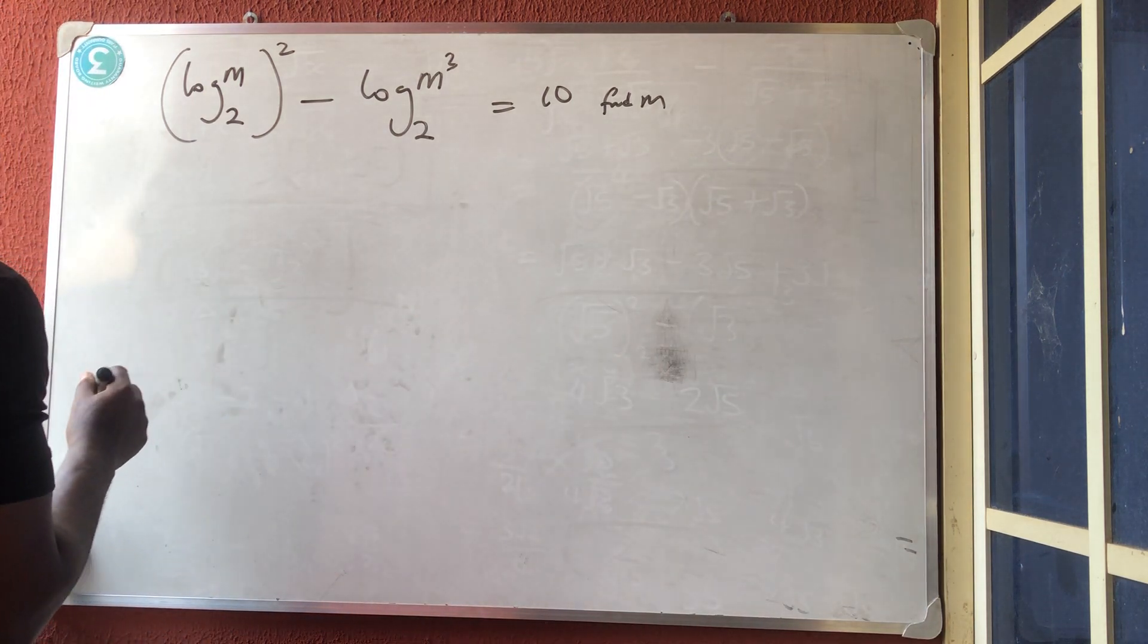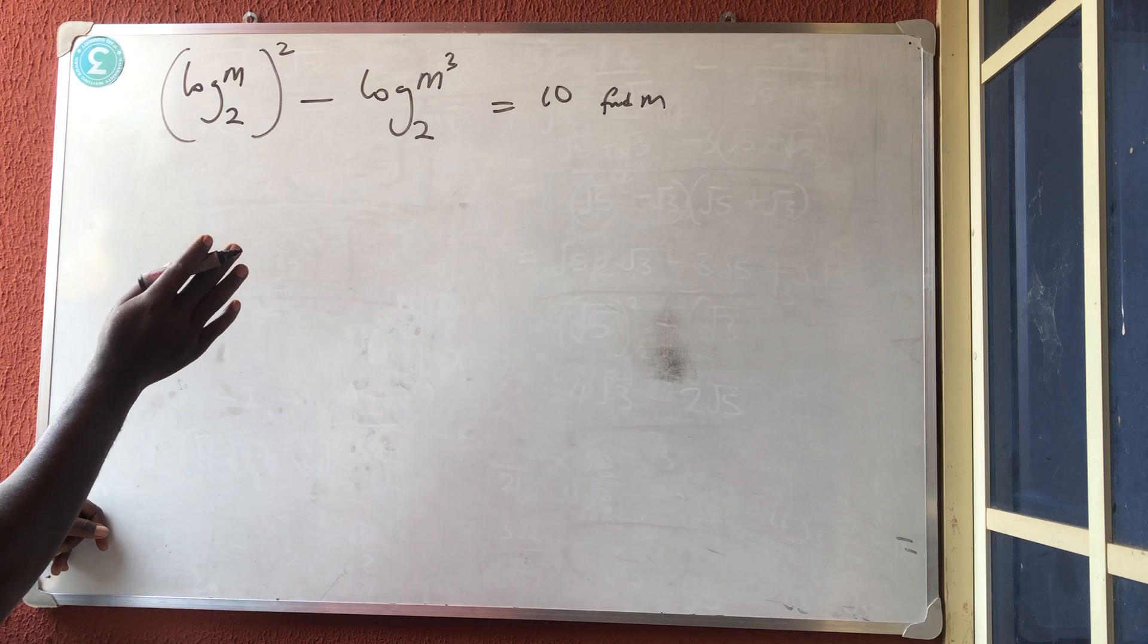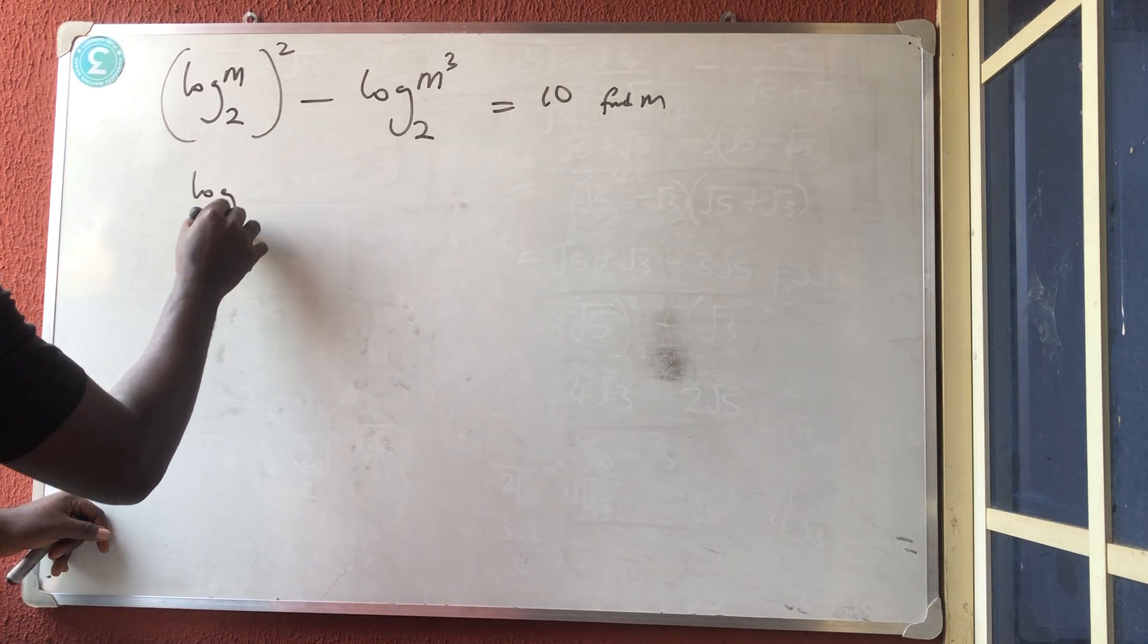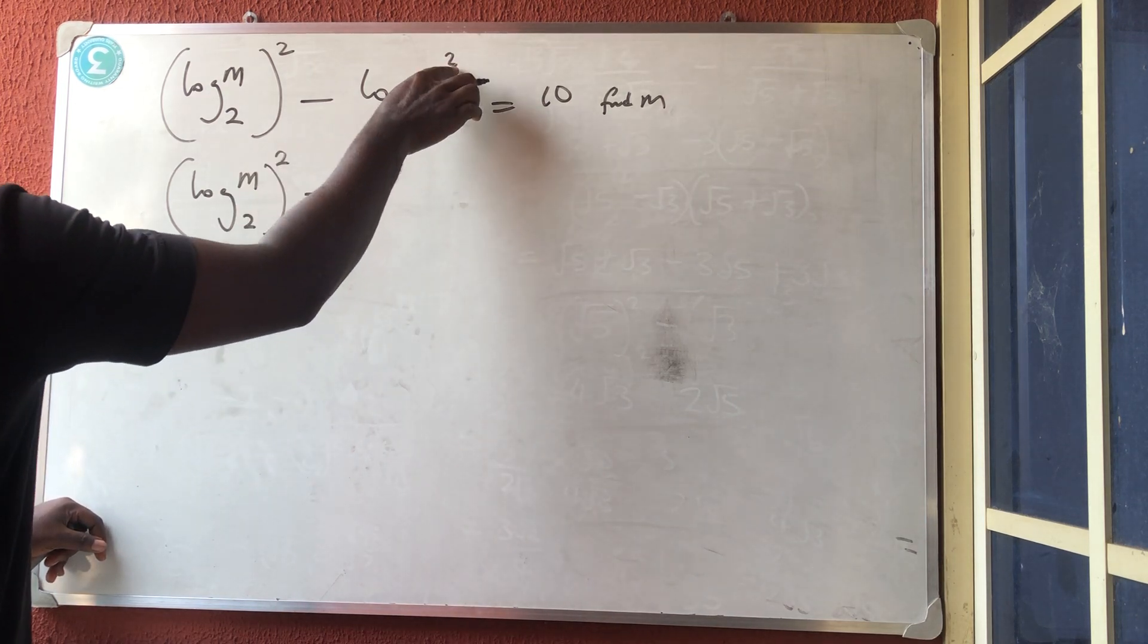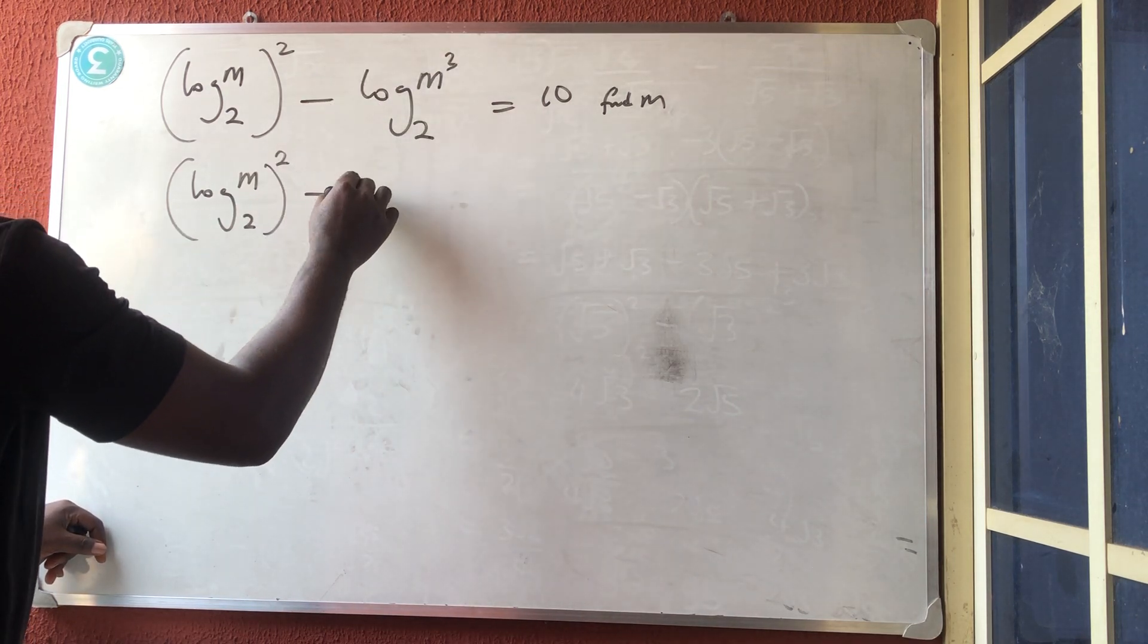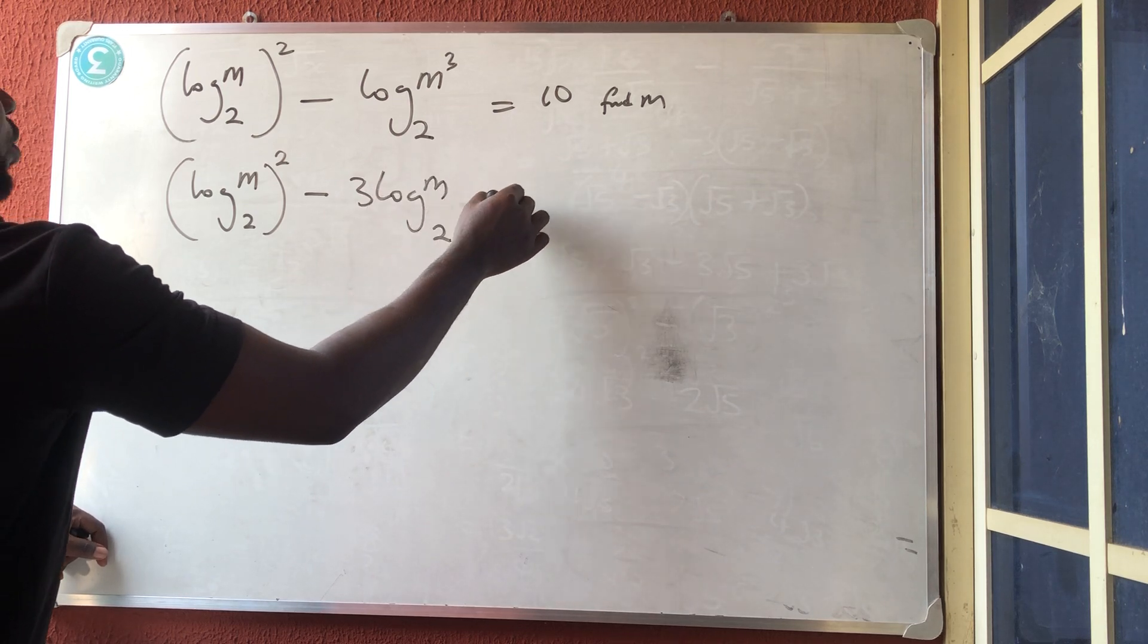Now, if you look at this question, this is a quadratic equation. If you look at it, let me show you. This is log m base 2, very simple question, all squared minus. These three can go to the back to have 3 log m base 2 is equal to 10.